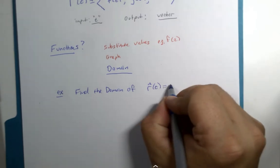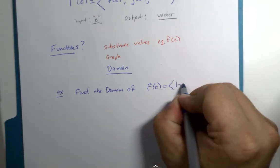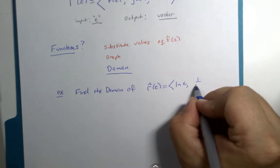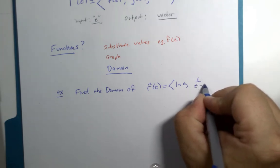And let's make this: r(t) = <natural log of t, one over t minus six>.